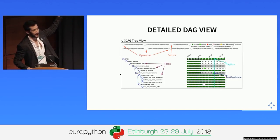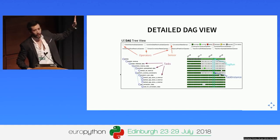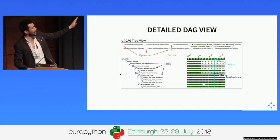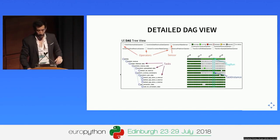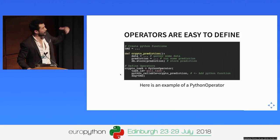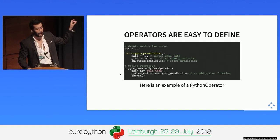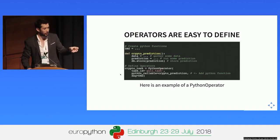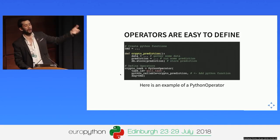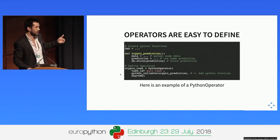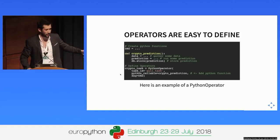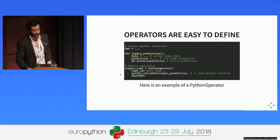You can also have a detailed DAG view showing a specific DAG with all operations and executions on each date — for example, it ran every day and you can see it succeeded. Operators are easy to define. In this case, we're defining a crypto prediction where you get the data, run the prediction, and store it. We're using a Python operator to just wrap a Python function and run it whenever it's its turn. So when you define your DAG, it runs the data fetch, then the actual prediction, then maybe another operator that puts it somewhere else or sends an email.